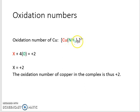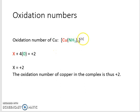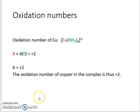We have four of them — tetra — so it's tetra amine, giving us four times zero. This complex has got a charge of two plus, so it is equal to plus two. Now we can solve for x, and our copper has an oxidation state of plus two.